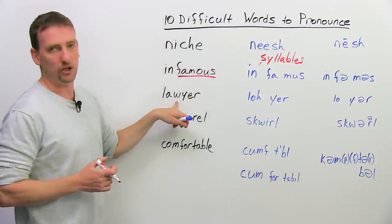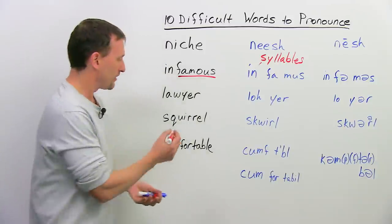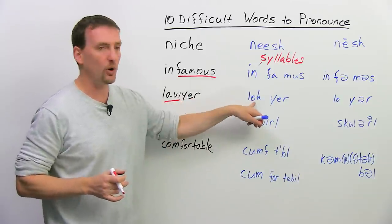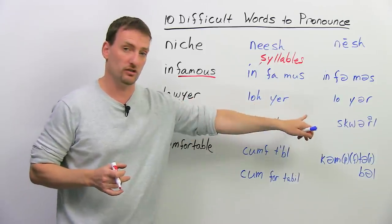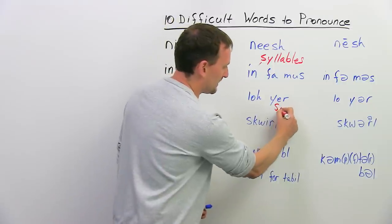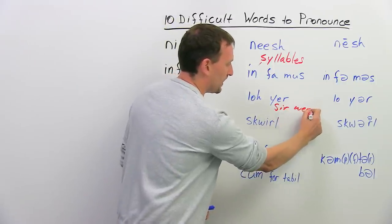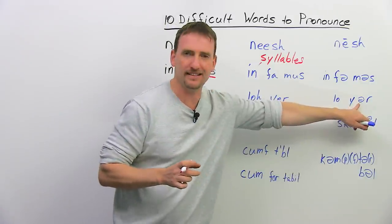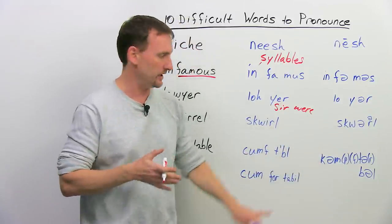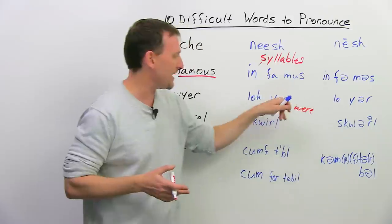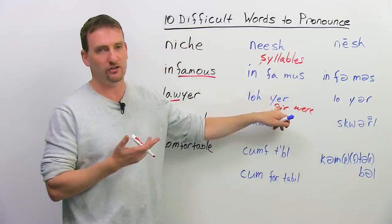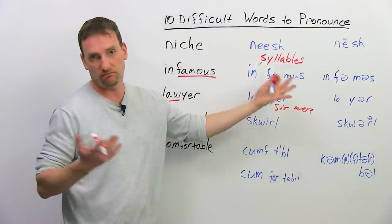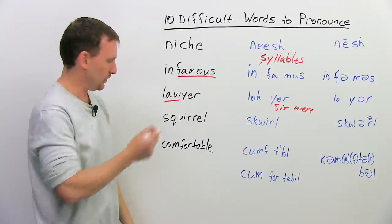Now, lawyer. The person who practices law. So, this word, law, is aw. But when we're talking about the person, it's o. Law. Lawyer. Lawyer. This yer is the same as sir or were. So, one of the good things you can also do is try to find the pronunciations of words that you do know how to say properly, like sir or were, and then apply that to other words that you're not sure about. So, you know this spelling, yer, sir, were. Lawyer. Very straightforward. Not lawyer. Okay? Lawyer.